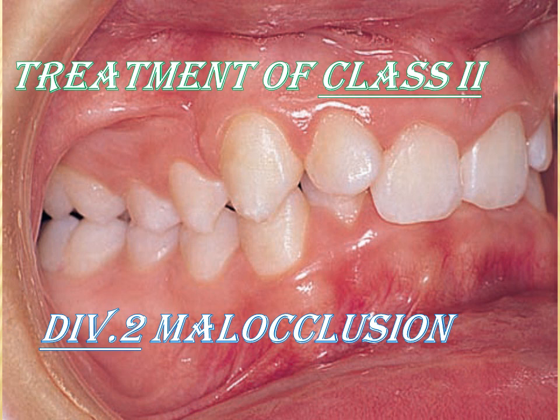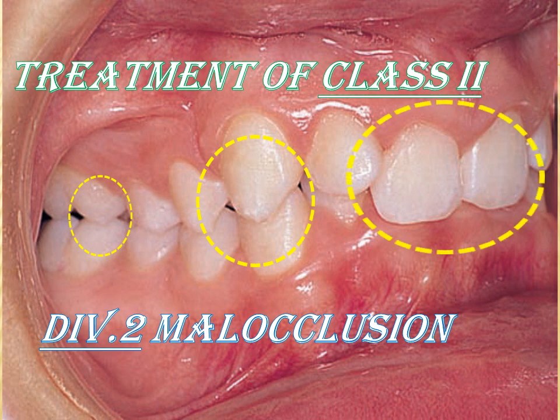Before discussing management, it is very important to know the occlusal features of this malocclusion. Starting with Angle's classification, based on molar and canine relationship, both are in a Class 2 relation. Using the British Standard classification, there is a Class 2 incisor relationship with retroclination of the incisors backward — which is why we call it Class 2 Division 2 Malocclusion.